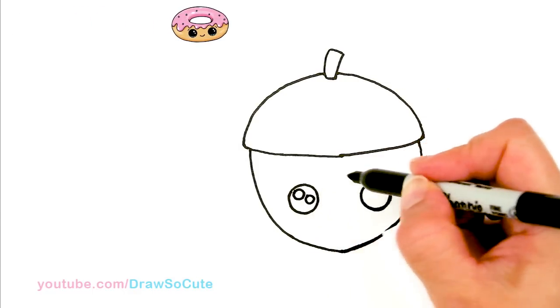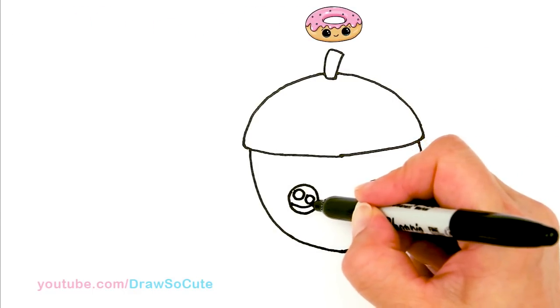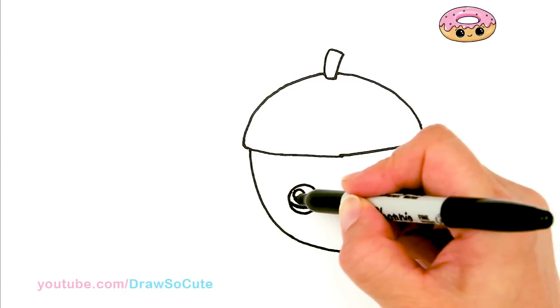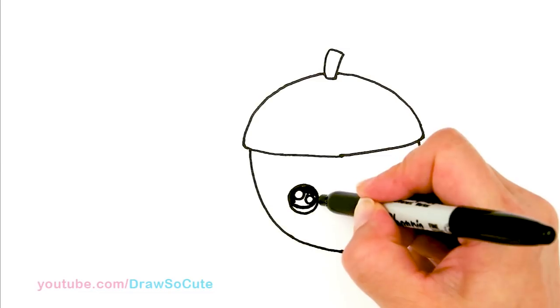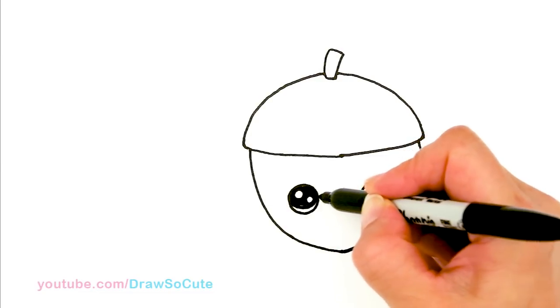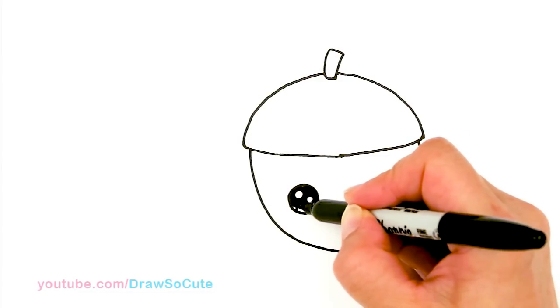So two small circles inside for highlights. And the curved line at the bottom. And just shade in the top. And the lines at the top.